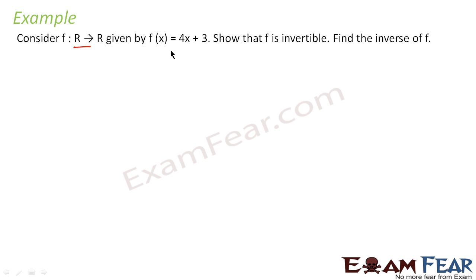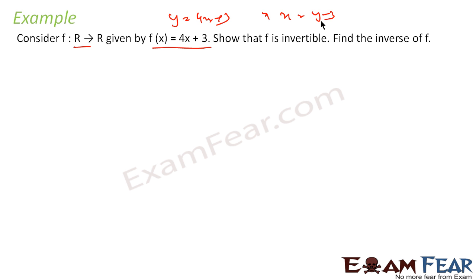We have the function from R to R given by f(x) = 4x + 3. We have to prove it is invertible and also find its inverse. The approach is: rather than proving one-to-one and onto separately, we can define a function g and then find g∘f and f∘g and prove invertibility that way. From y = 4x + 3, we get x = (y-3)/4. So let us define g: R → R as g(y) = (y-3)/4.